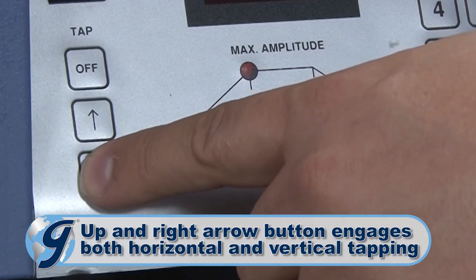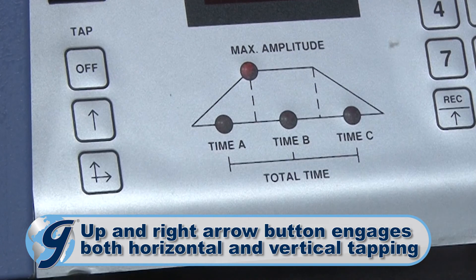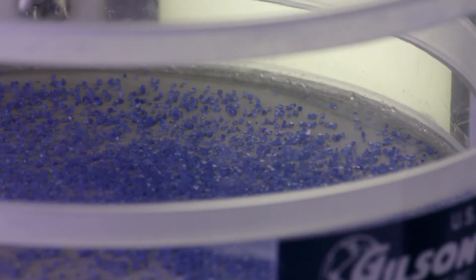The Up and Right button engages both horizontal and vertical tapping, assuring maximum movement of hard-to-separate material.